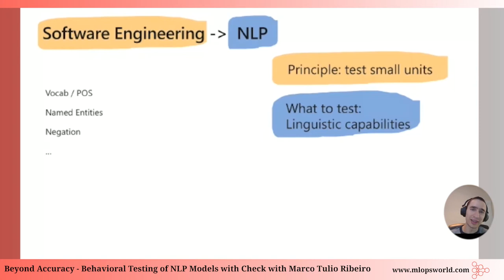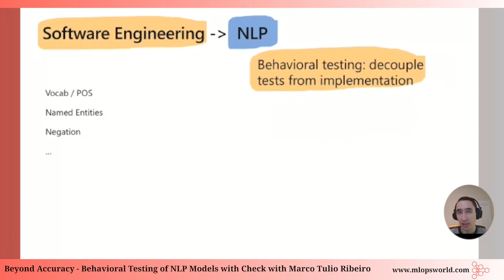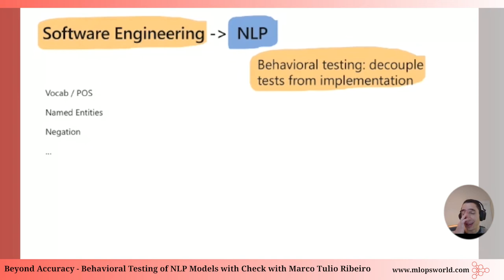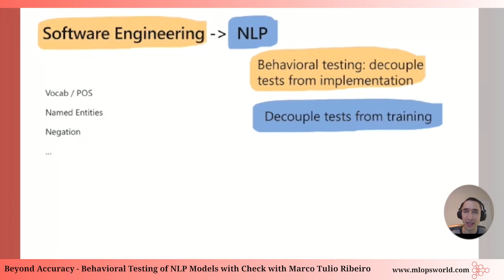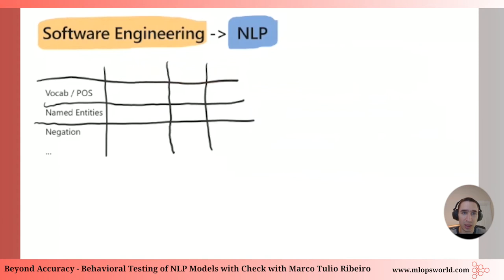We should be testing linguistic capabilities like vocabulary, part of speech, named entities, negation — things that are general. Whatever NLP system you have, it has to be able to deal with negation in some capacity. Another principle from software engineering is decoupling tests from implementation. In NLP, we typically split a dataset into training, validation, and test — but that's not ideal because biases in training appear in tests too. So we suggest decoupling test from training and testing behaviors with different test types, forming a matrix where rows are capabilities and columns are test types.